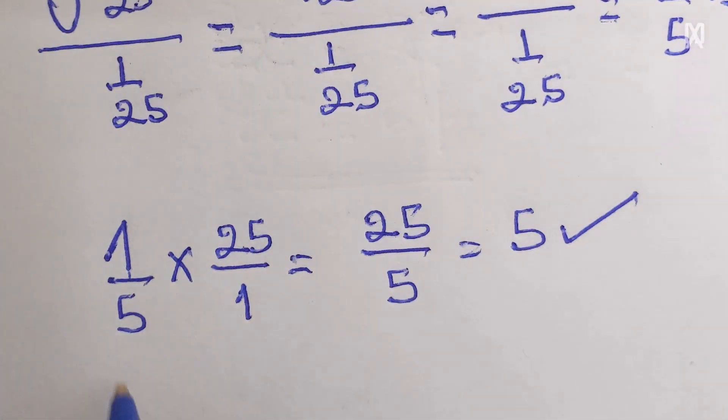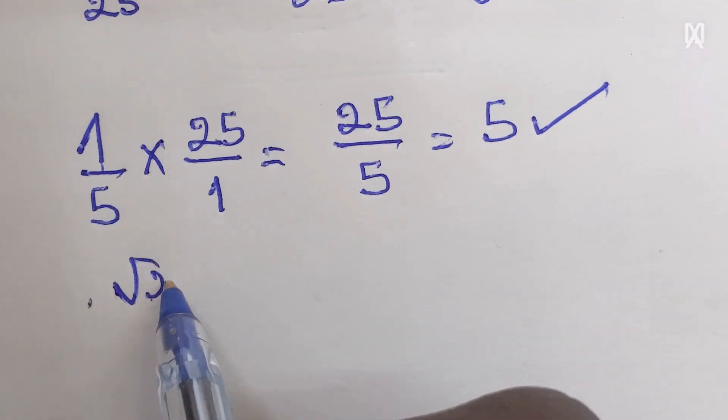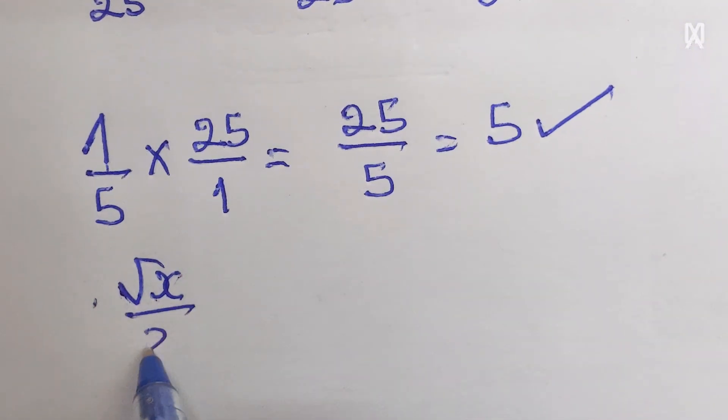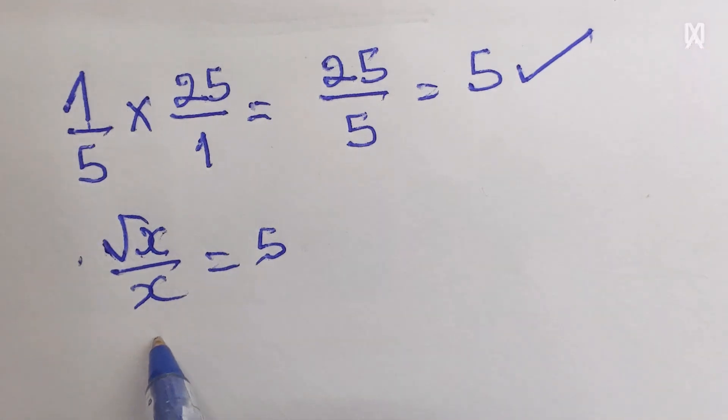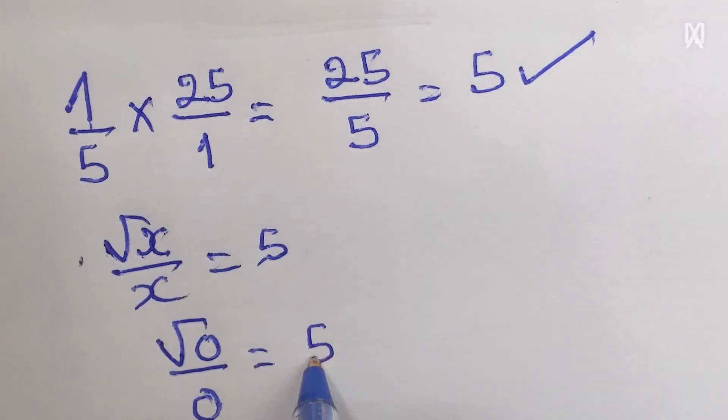By checking the second solution, square root of x over x which is equal to 5, this will bring square root of 0 over 0 is equal to 5. Then square root of 0 is equal to 0, then by cross multiplication will be equal to 0.